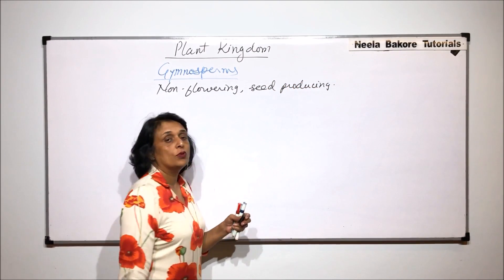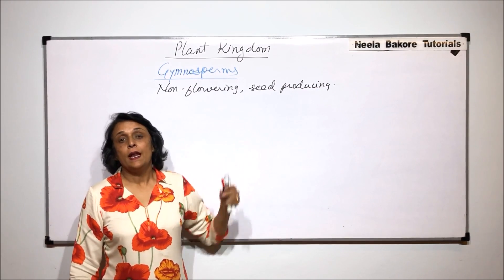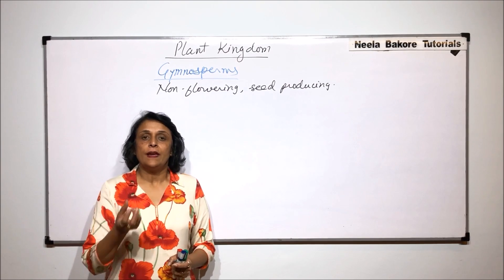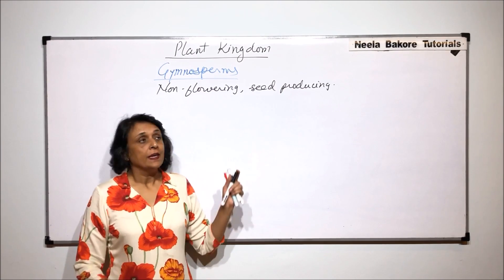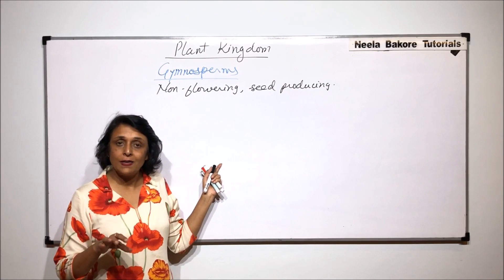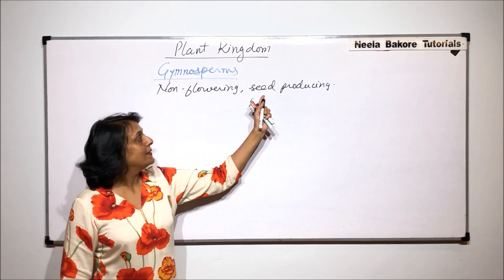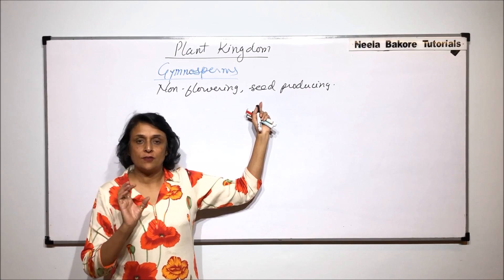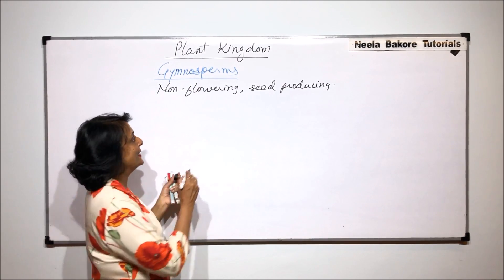When we talk about a normal angiospermic plant, we know that the ovary changes into the fruit and the ovule changes into the seed. Now if these plants are non-flowering, that means there are no floral parts, no ovaries, so fruit formation will not take place. The seeds which are produced are not going to be enclosed inside a fruit-like structure, so these seeds are naked seeds.